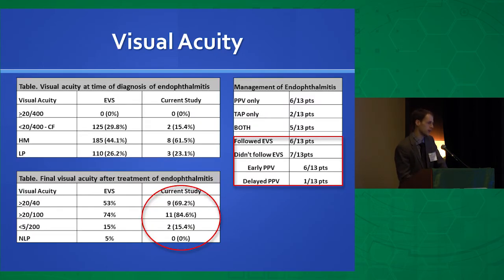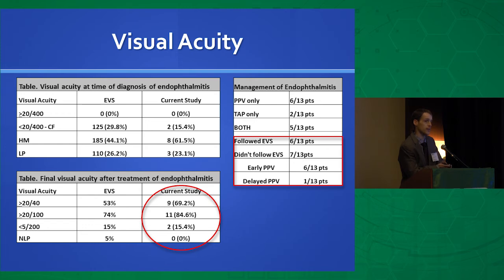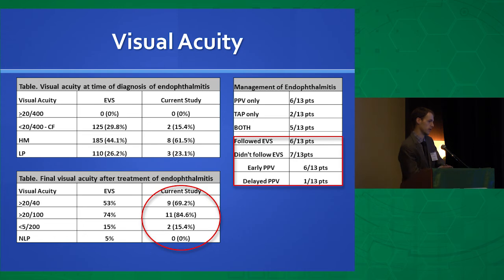Looking at visual acuity, starting vision after endophthalmitis diagnosis was comparable to the EVS study. However, final outcomes were better — nearly 70% of patients had 20/40 or greater vision, and 85% were 20/100 or greater at final follow-up. This was largely because we didn't follow the EVS protocol — we did earlier vitrectomy. Six out of 13 patients with hand motion or better vision received an early vitrectomy as opposed to initial tap.